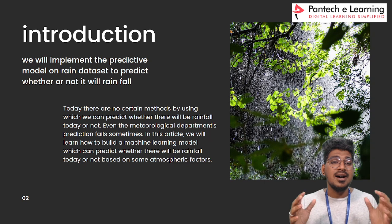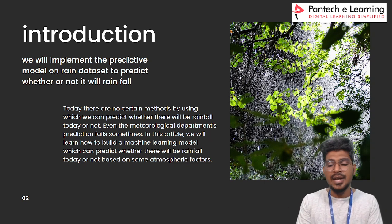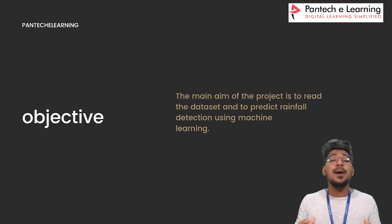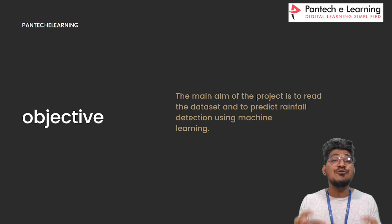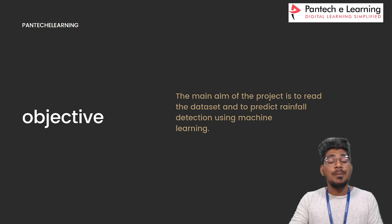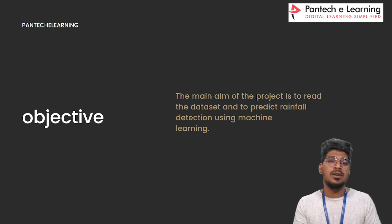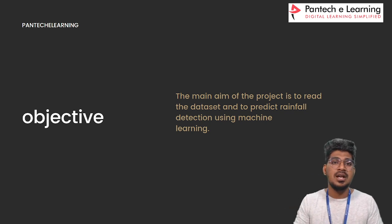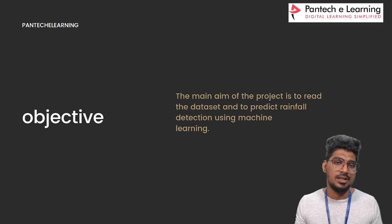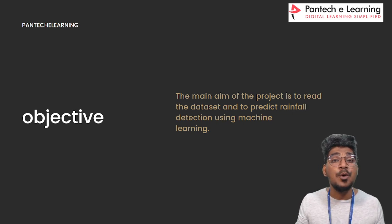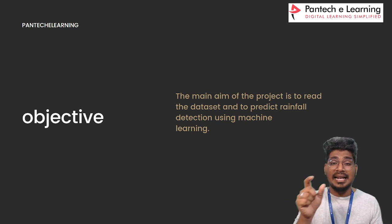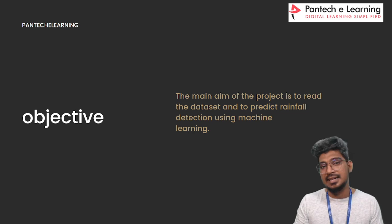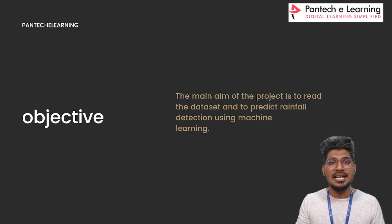That is our target — the basic introduction for rainfall prediction. The main objective of this particular project is to read the dataset and to predict rainfall detection by using machine learning technology. Based on weather conditions such as temperature range, humidity range, and wind range, we can predict whether rain will fall or not. We are going to create and train a model for rainfall prediction using two different machine learning algorithms, and find the best model based on evaluation scores.